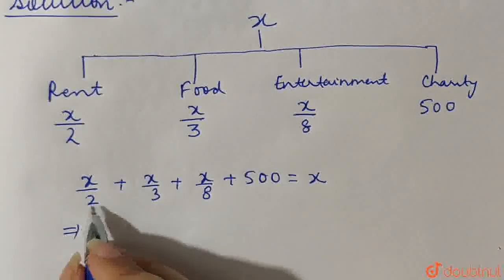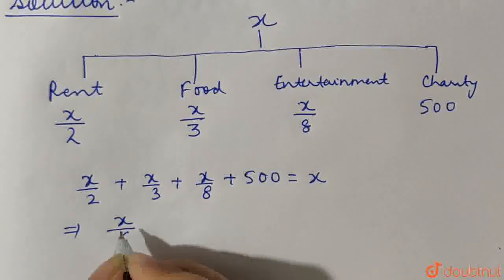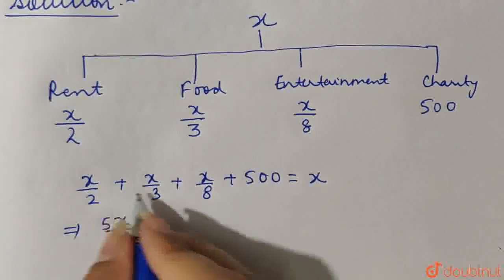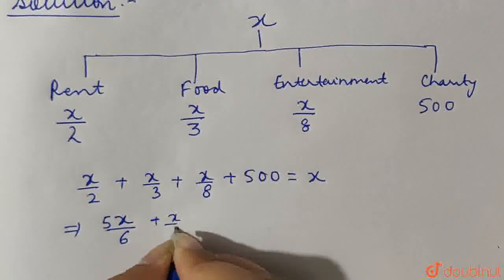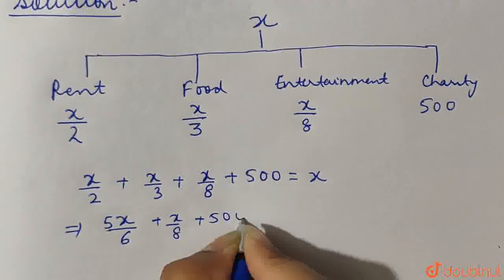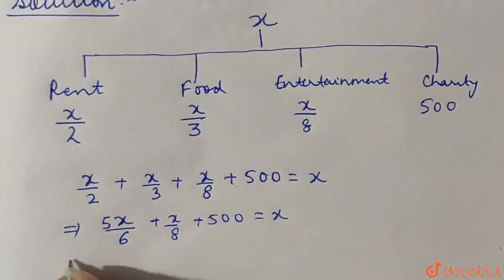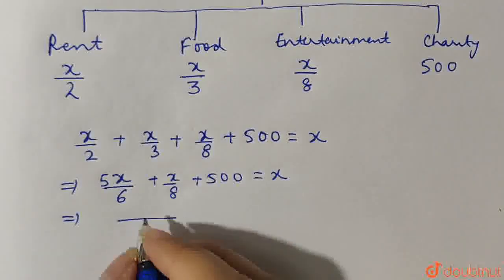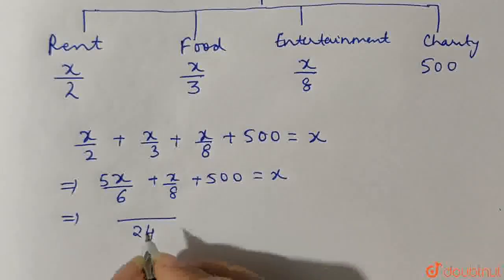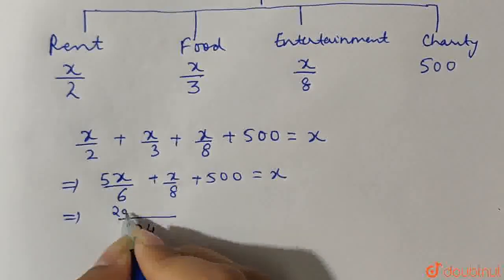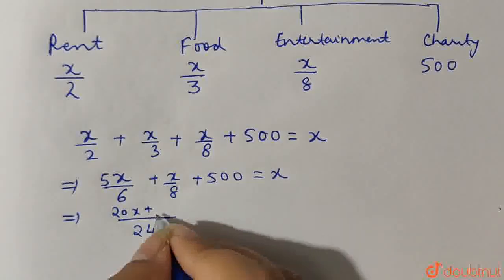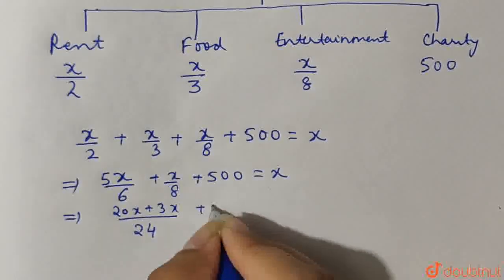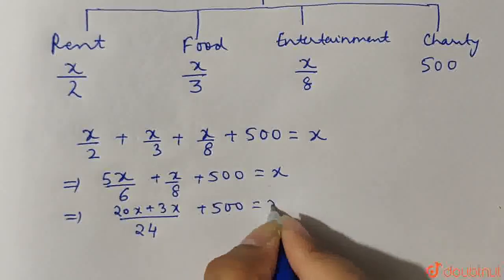5X by 6 from the first two terms plus X by 8 plus 500 is equal to X. From here on taking LCM we have 24. So we have 20X plus 3X plus 500 is equal to X.